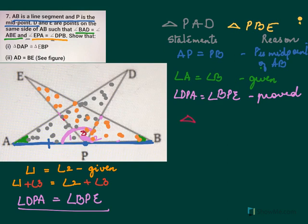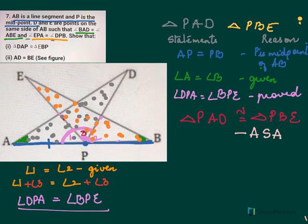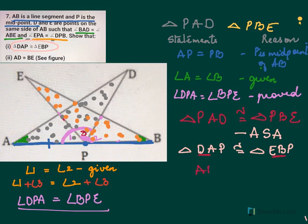Therefore, triangle PAD is congruent to triangle PBE by the ASA test — angle, side, angle. We can also write this as triangle DAP congruent to triangle EBP. Therefore, AD equals BE by CPCT — corresponding parts of congruent triangles.